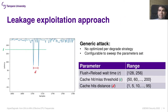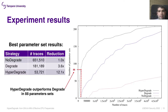We employed a generic leakage exploitation approach that is not optimized for any degradation strategy and is configurable to sweep a set of parameters. The idea of this experiment is to have a common approach for comparing the three strategies — no-degrade, degrade, and HyperDegrade. For each parameter set combination and degradation strategy, we executed the attack against OpenSSL. The results in the table belong to the best parameter set for every strategy. Notice how HyperDegrade outperforms the other two, requiring significantly fewer traces. The cumulative distribution shows that there are 88 parameter sets where HyperDegrade can exploit this leakage before degrade can succeed.